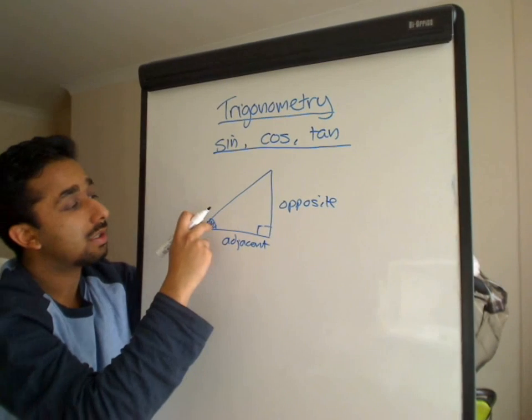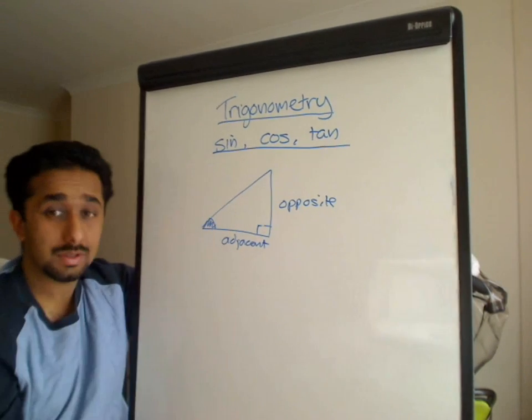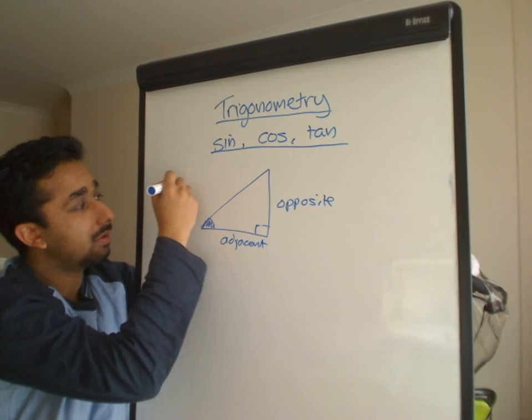And the side, the biggest side basically, is called a hypotenuse.